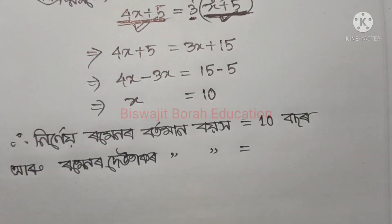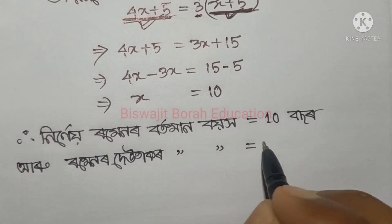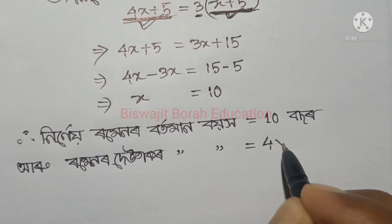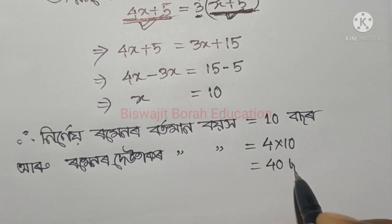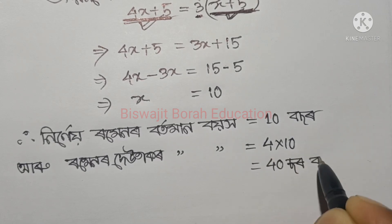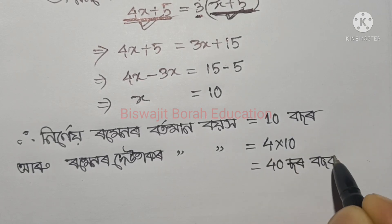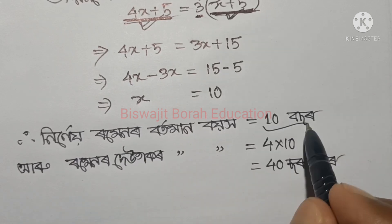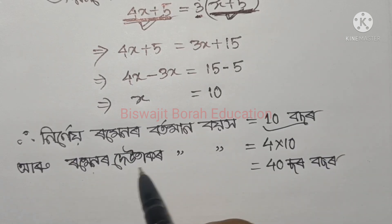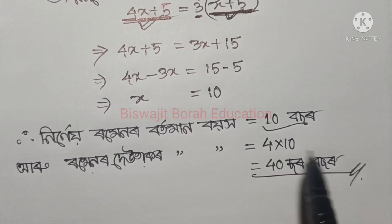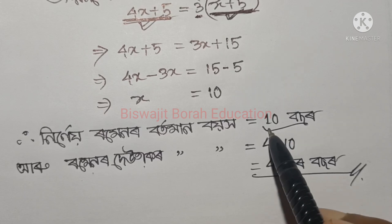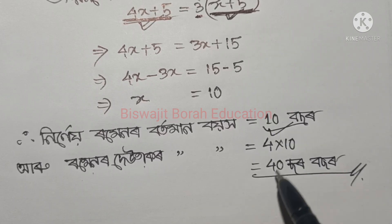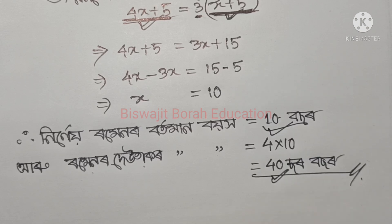4X. 4X mane 4 into 10 basa. 12 sar gon. 12 sar.